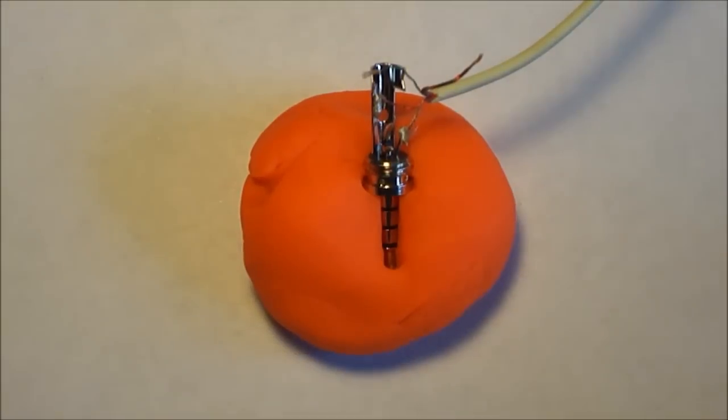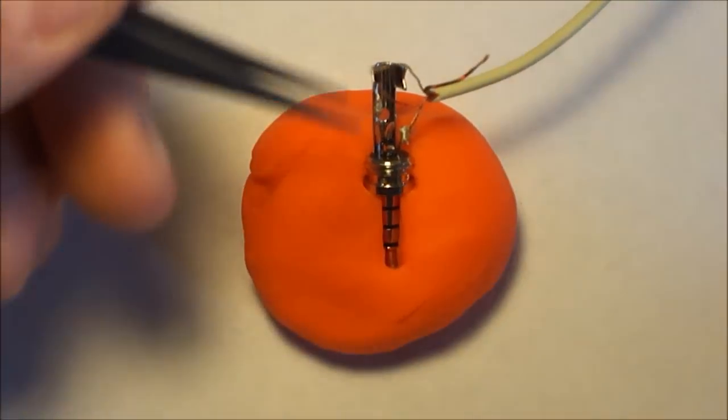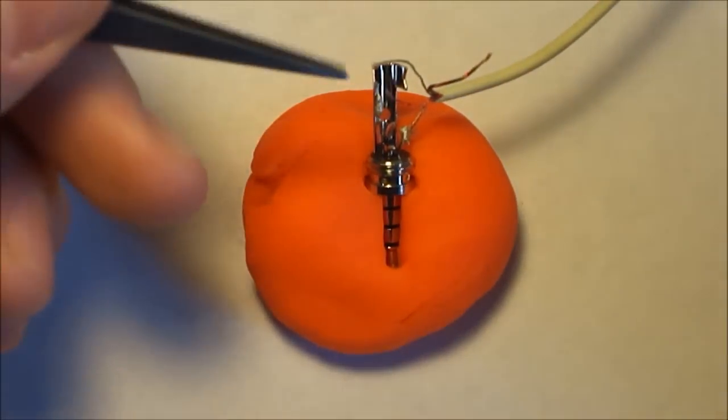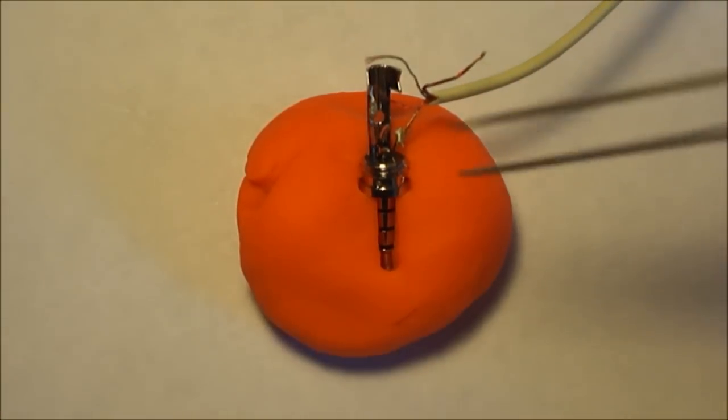A tip that I'd like to recommend is to use a piece of Play-Doh or Silly Putty or something like that, something that won't really stick on the plug itself of course, but something that actually can hold it in place while you solder these wires on. I found that to be a little bit easier when you're soldering.